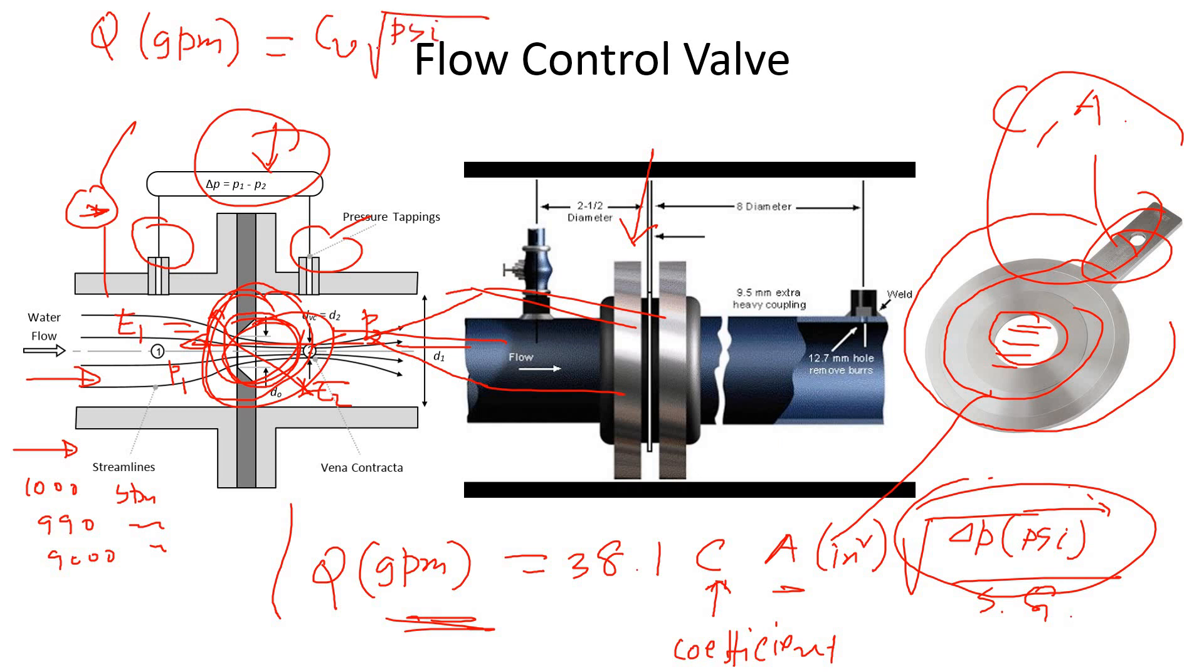It's going to be psi divided by SG. For the orifice, this coefficient uses a breakdown number - it uses another constant, area 38.8. Instead of that, there is a single constant for flow control valve.